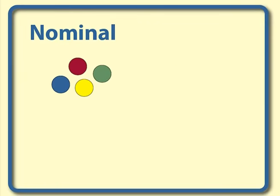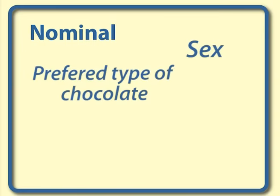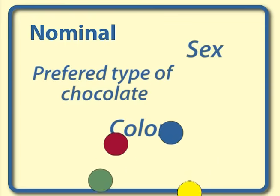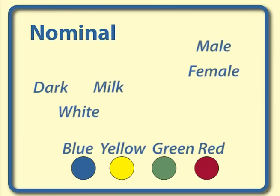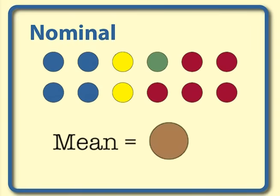The nominal level is the most basic level of measurement, also known as categorical or qualitative. Examples of nominal variables are sex, preferred type of chocolate, and colour — these are descriptions or labels with no sense of order. Nominal values can be stored as a word, text, or given a numerical code; however, the numbers do not imply order. To summarise nominal data, we use a frequency or percentage. You cannot calculate a mean or average value for nominal data.